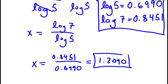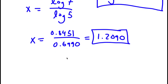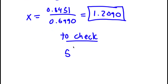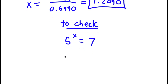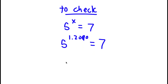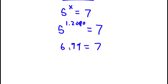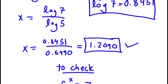So this is my answer. To check: starting with 5 to the power of x equals 7, I know x equals 1.2090. So 5 to the power of 1.2090 is equal to approximately 6.99, which rounds up to 7. So I have 7 equals 7, which confirms my solution is correct.